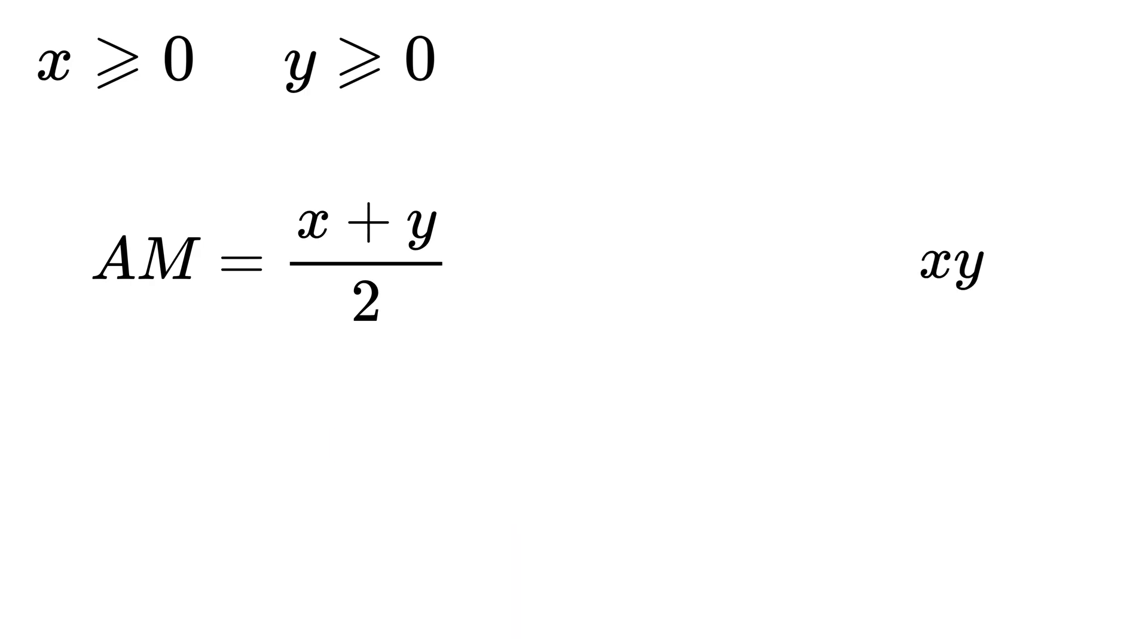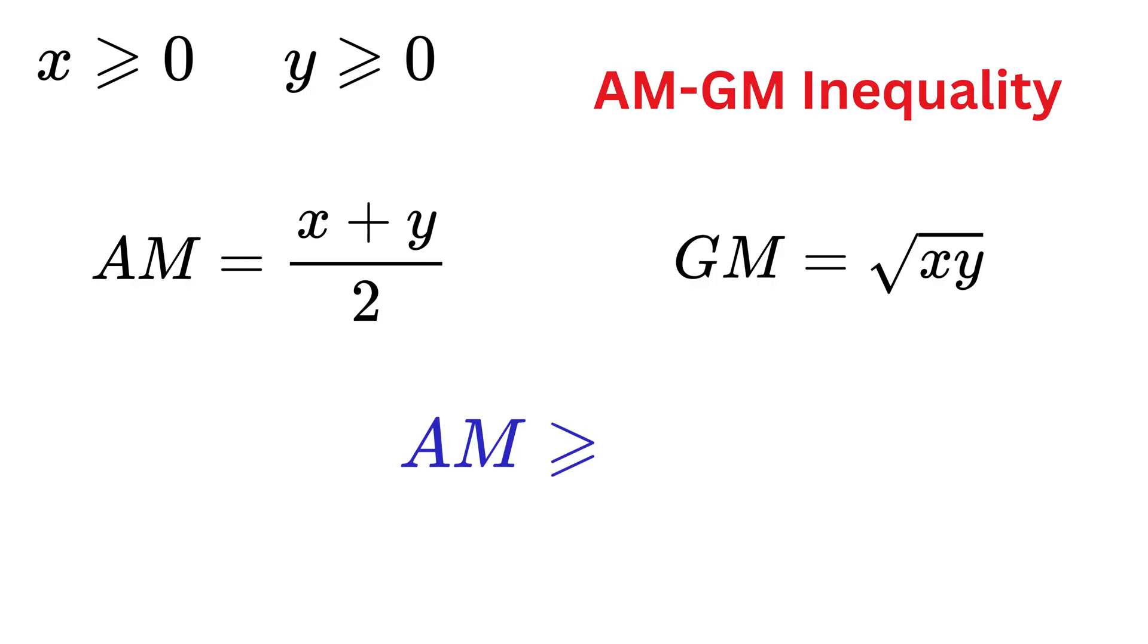Now multiply both numbers together, and then take the square root of the result. This new value is called the geometric mean, or GM of x and y. There is a thing called in math, the AM-GM inequality, which tells us that the arithmetic mean is always greater than or equal to the geometric mean, with equality holding true only when x equals y.